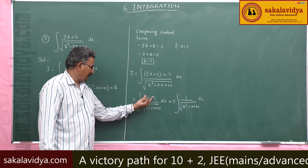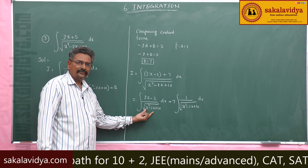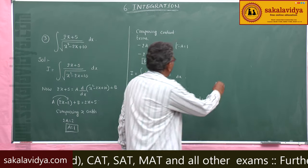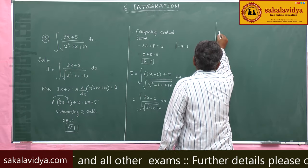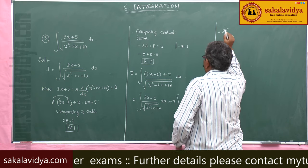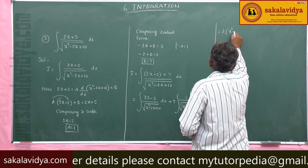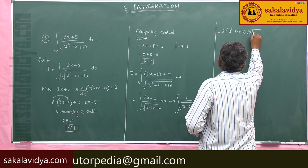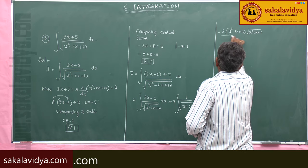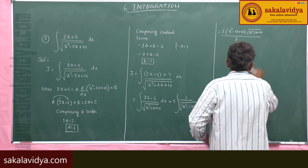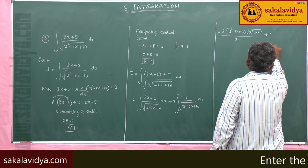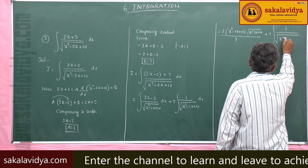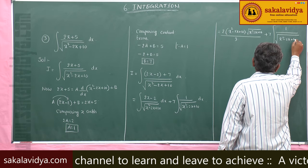The first part is of the form f'(x) by root of f(x), which gives 2√f(x). So it becomes 2√(x² - 2x + 10). For the second integral, the denominator x² - 2x + 10 can be written as (x - 1)² + 9.